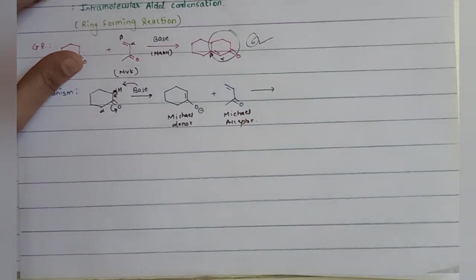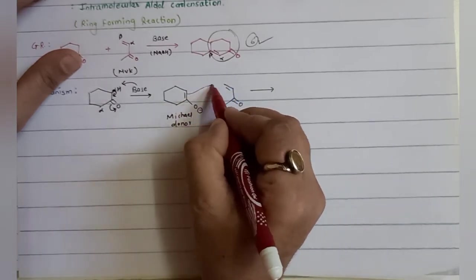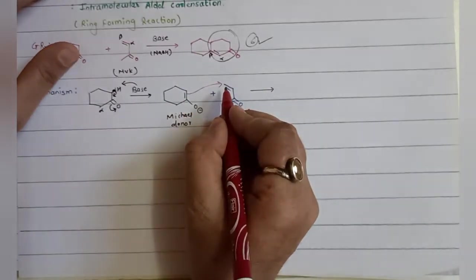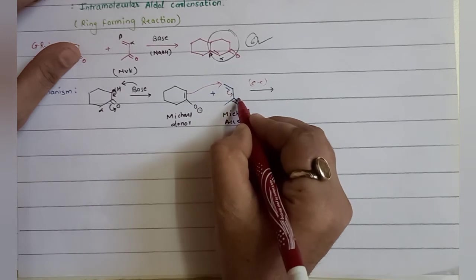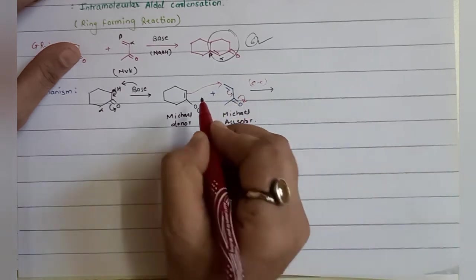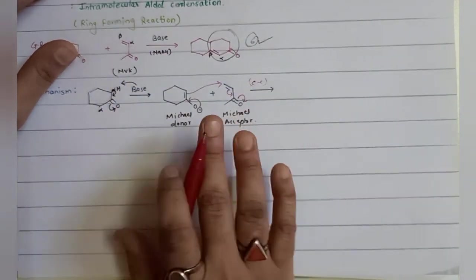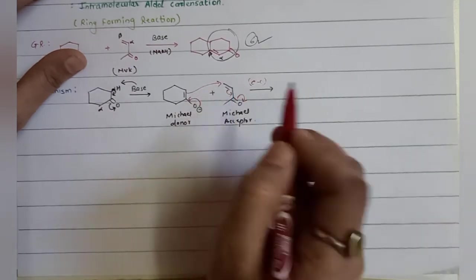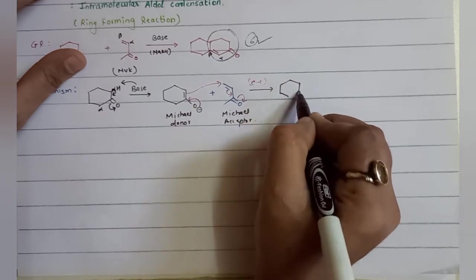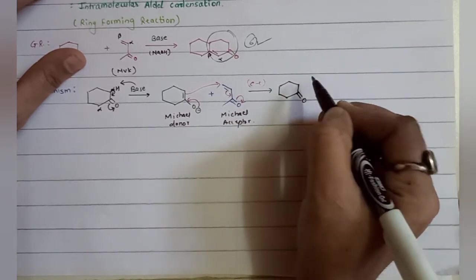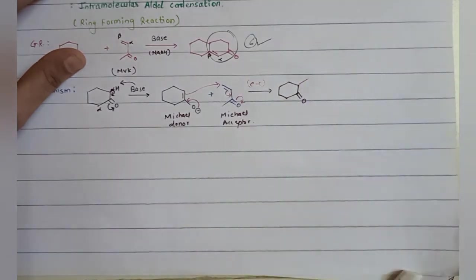The bonds are going to migrate from this reaction - the double bond migrates towards the carbon, carbon-carbon bond formation takes place, and this bond migrates over here. The oxygen migrates over here - this is how they are going to migrate intramolecularly. Once the reaction is complete, the new carbon-carbon bond is formed, and again we get a ketonic compound.